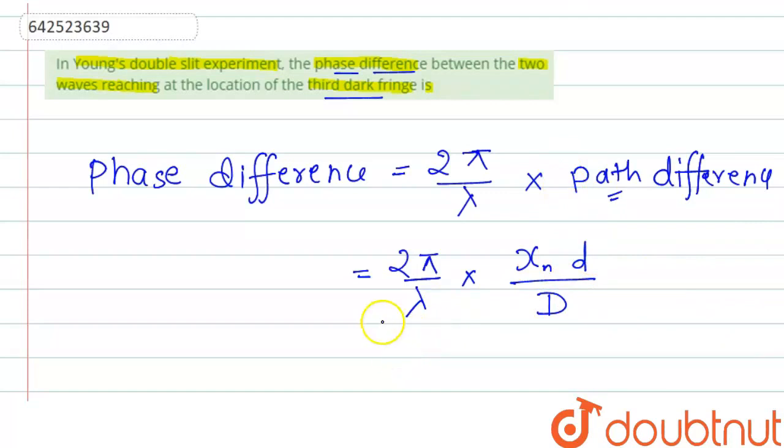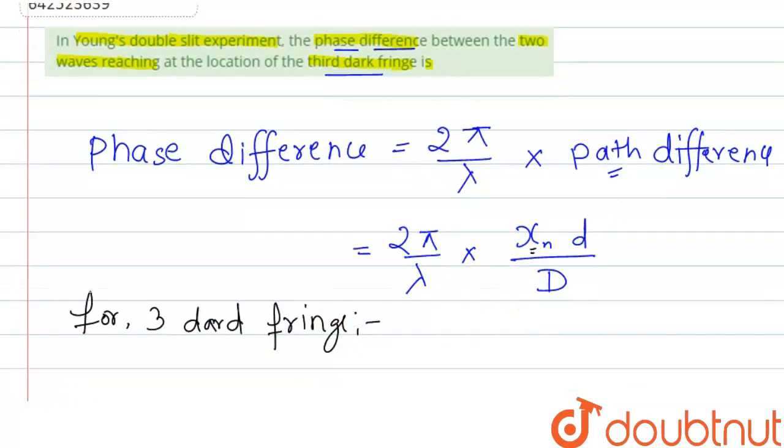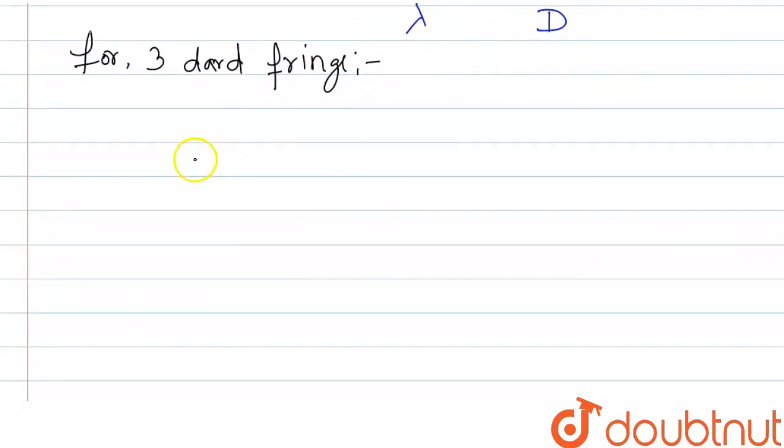Now, for the third dark fringe, xn can be written as (2n-1)/2 × λD/d.